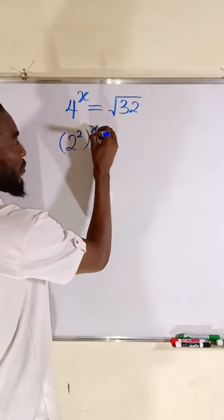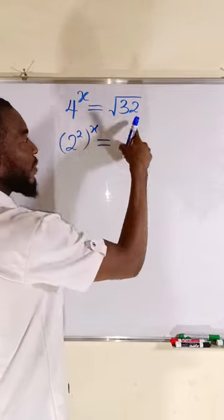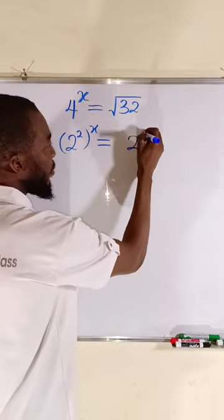But because of this power of x, we have to raise it to the power of x. This is equal to 32, which is the same thing as 2 to the power of 5.